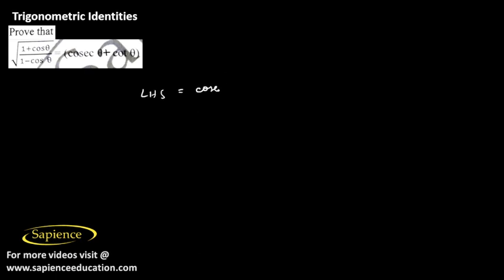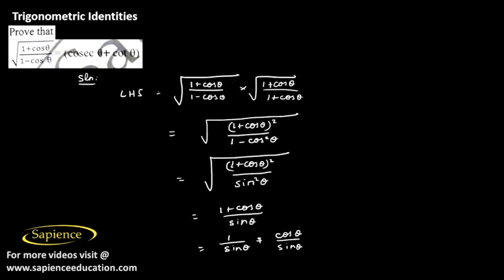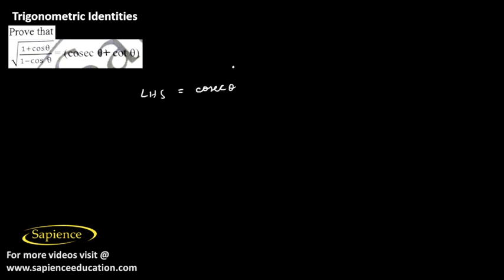1 by sine theta is cosecant theta, and cos theta by sine theta is cot theta, which is our right hand side. Hence proved.